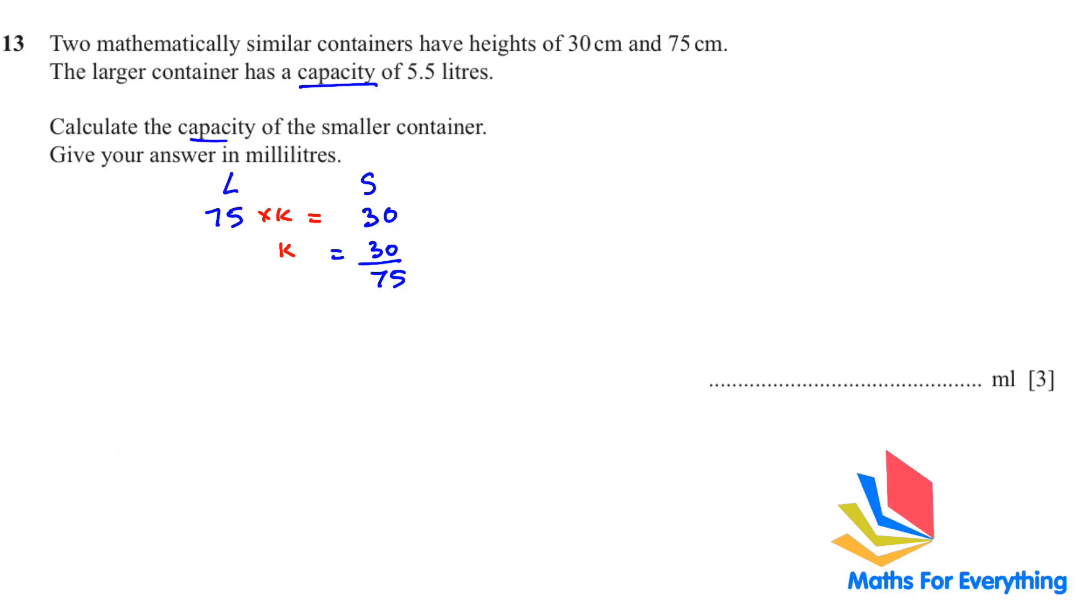Capacity means volume. Therefore the larger capacity is 5.5 multiplied by our scale factor which is k, 30 over 75 will give us the capacity of the small container. The only thing you need to remember: capacity, as I said, is volume, so the power will be cubic. Put this in the calculator and you will get the answer. If it was an area we will square it. And the answer is 0.352 liters.